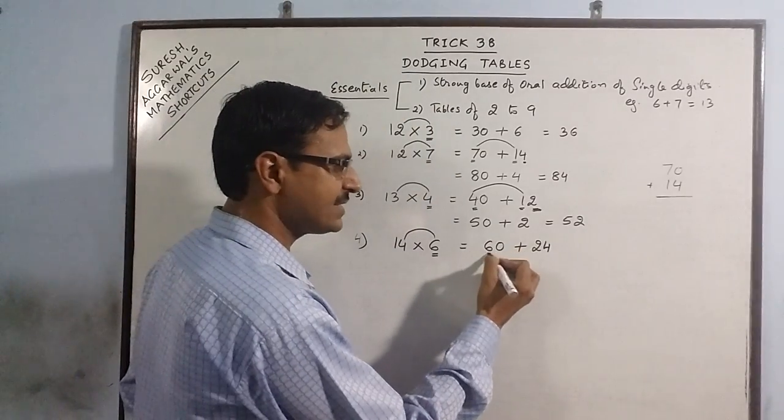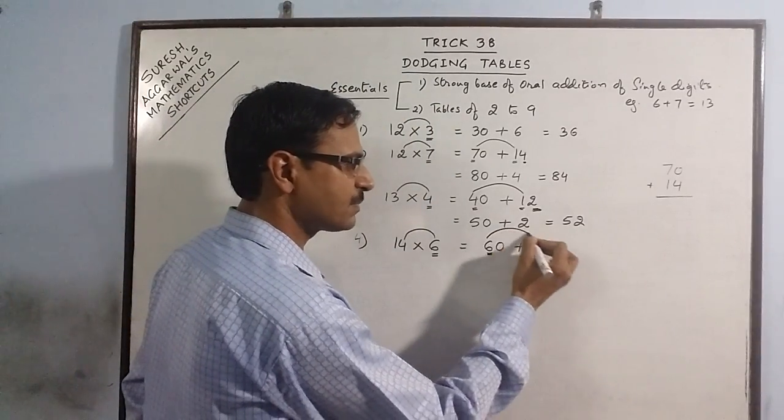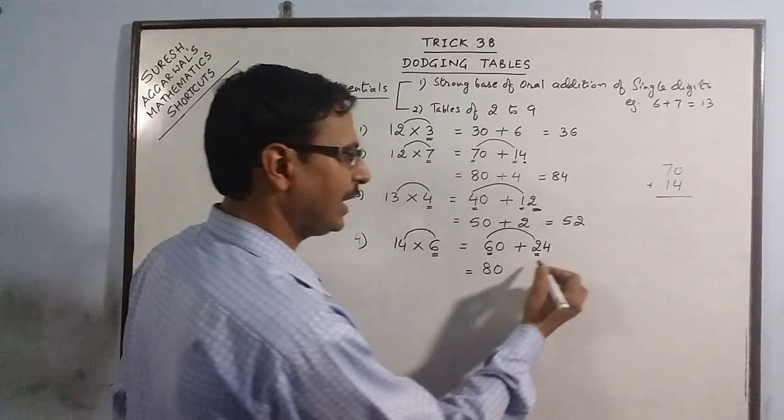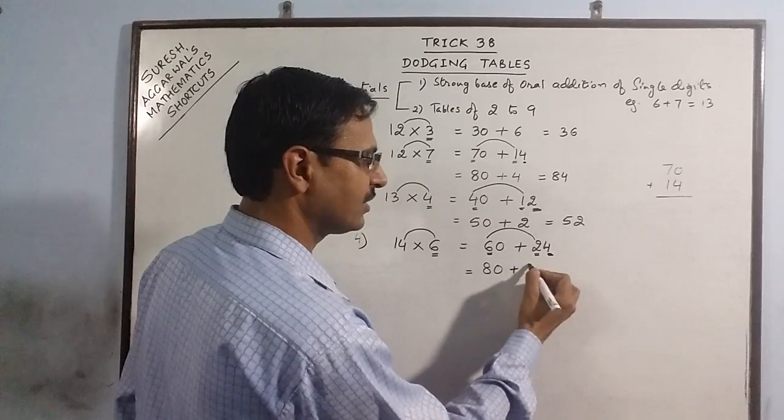Now, tens digits: 6 plus 2 is 8, put a 0 and add this unit digit, so 84.